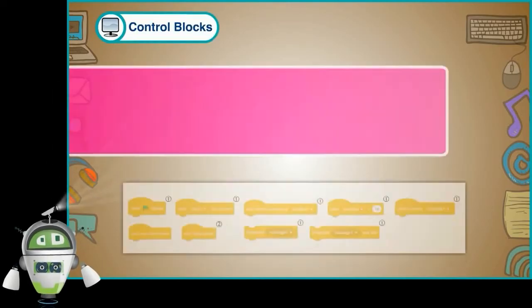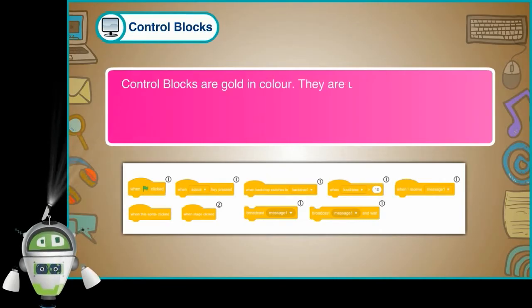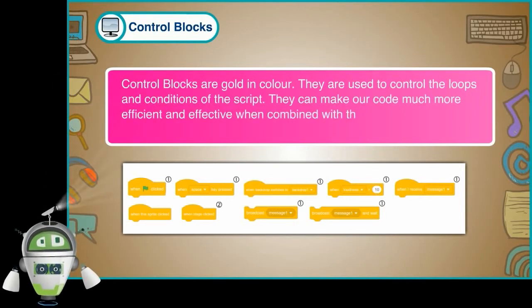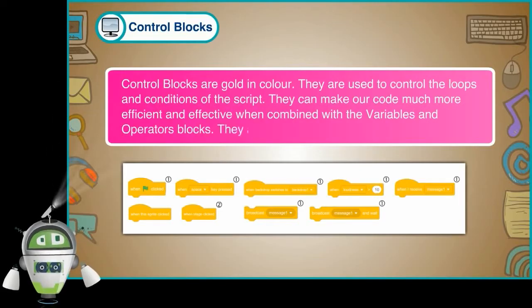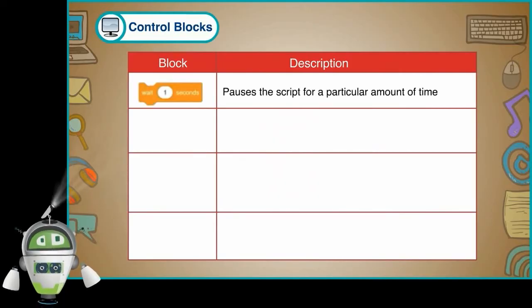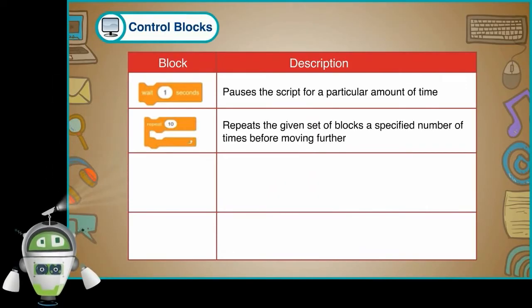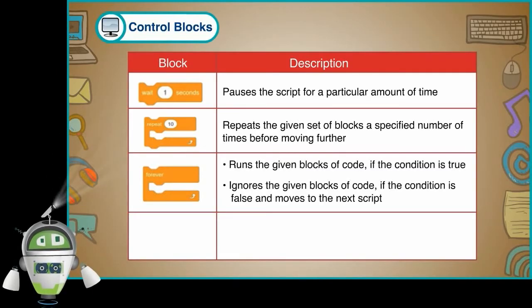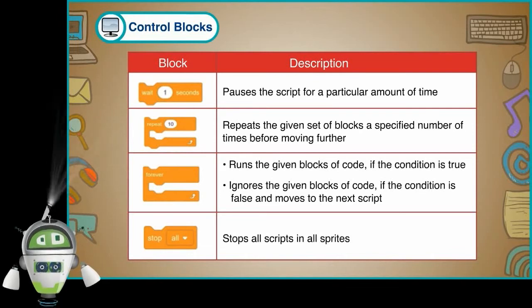Control Blocks are gold in color. They are used to control the loops and conditions of the script. They can make our code much more efficient and effective when combined with the variables and operators blocks. They are used for both sprites and backdrops. Pauses the script for a particular amount of time. Repeats the given set of blocks a specified number of times before moving further. Runs the given blocks of code if the condition is true; ignores the given blocks of code if the condition is false and moves to the next script. Stops all scripts in all sprites.